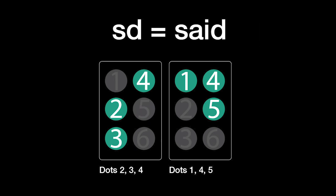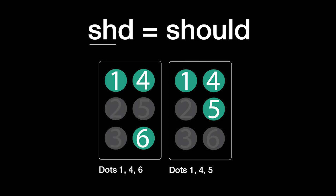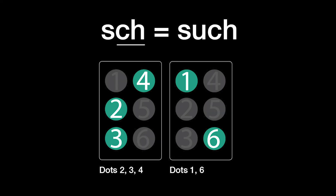Said is S-D: dots 2, 3, and 4, plus dots 1, 4, and 5. Should is S-H plus D: dots 1, 4, and 6, plus dots 1, 4, and 5. Such is S plus C-H: dots 2, 3, and 4, plus dots 1 and 6.